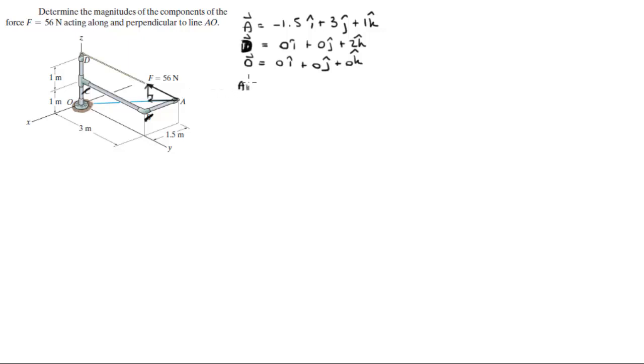So vector AD can be found by subtracting vector D minus vector A, and it comes out to be 1.5I minus 3J plus 1K.